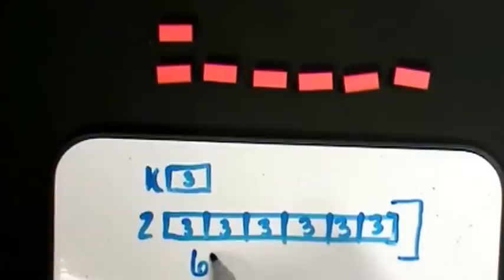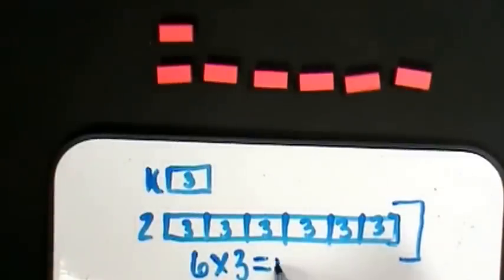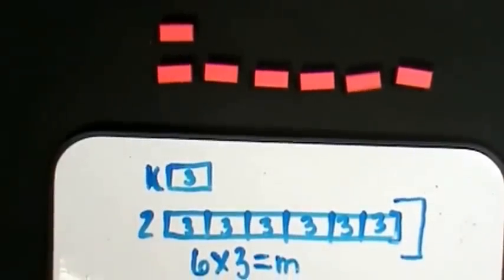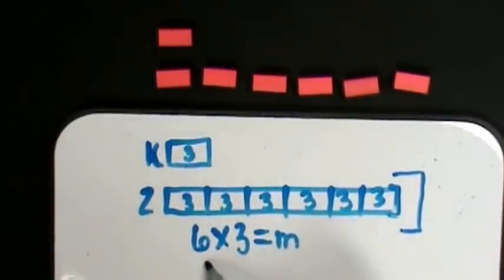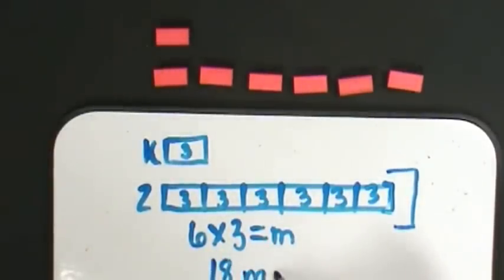Zack has six supply boxes. Each supply box has three markers. Six times three is 18. Zack has 18 markers.